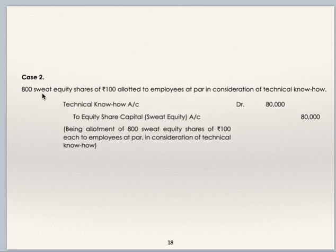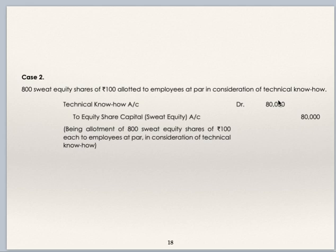Second case: 800 sweat equity shares of Rs 100 each allotted to employees at par in consideration of technical know-how. That means nothing has been received in cash from these employees — these shares are issued to employees because they have provided some technical knowledge. So the technical know-how account is to be debited and share capital account is to be credited, and technical know-how is to be shown on the asset side of the balance sheet, to be amortized over future years as decided by management. Journal entry: technical know-how account debit Rs 80,000 (800 × Rs 100); to equity share capital account Rs 80,000. Being allotment of 800 sweat equity shares of Rs 100 each to employees at par in consideration of technical know-how.